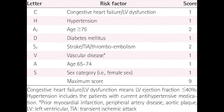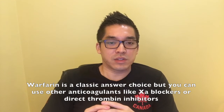First we're going to cover criterias. Make sure you know CHAD-VASC — this is the score you apply for atrial fibrillation. CHF, hypertension, age greater than 75 counts as 2, diabetes, stroke counts as 2, vascular disease such as peripheral artery disease or coronary artery disease, then age, and finally sex category as in female. If you have a score of 2 or more you want to treat with warfarin. If it's 0 or 1 then you treat with aspirin.